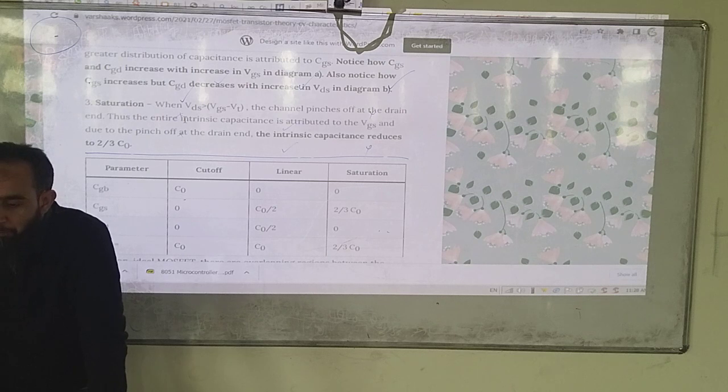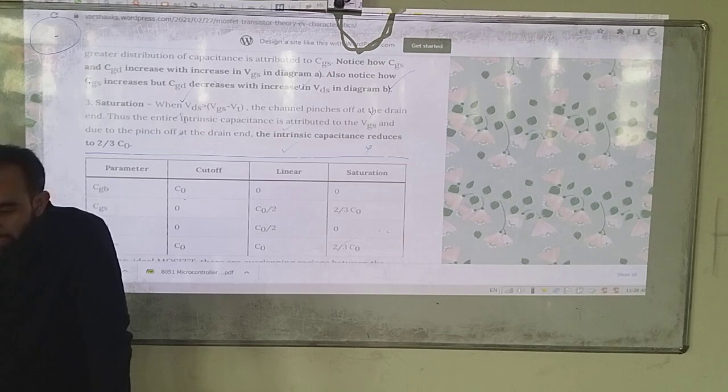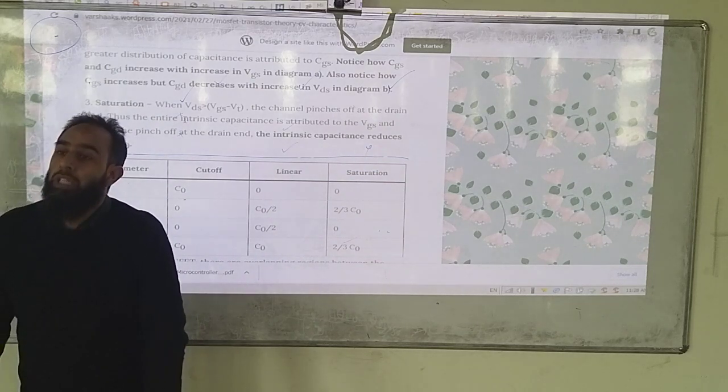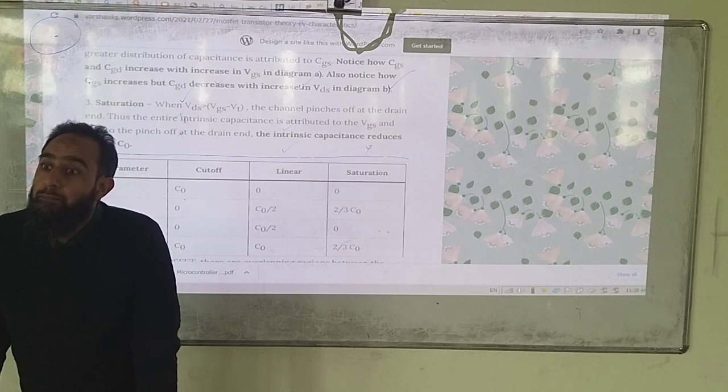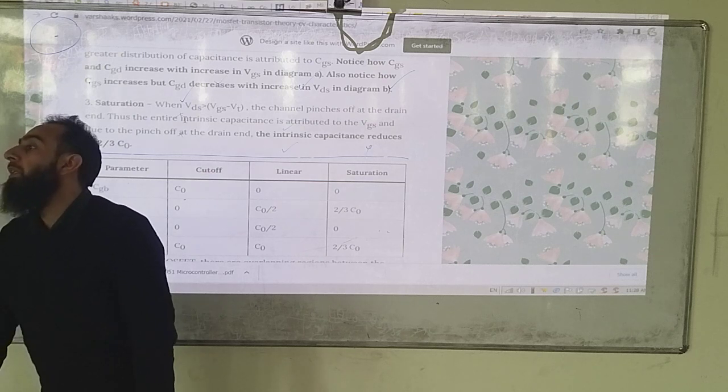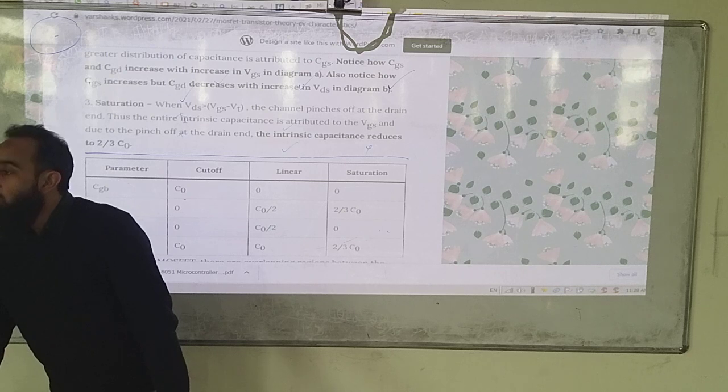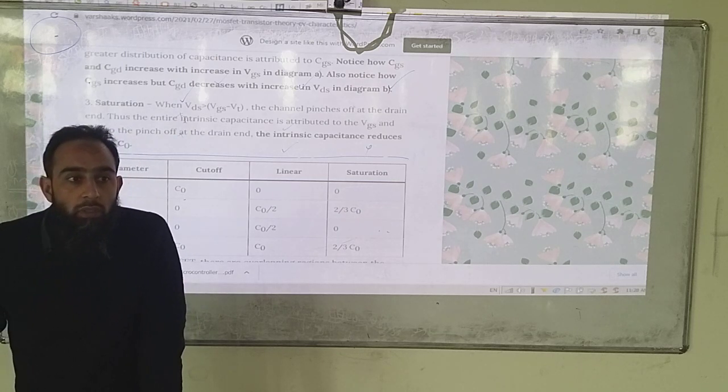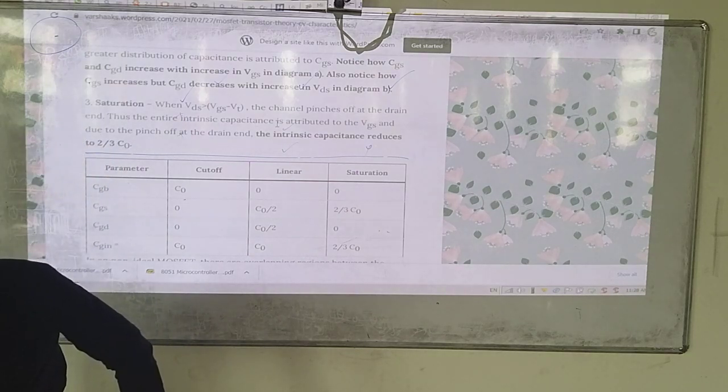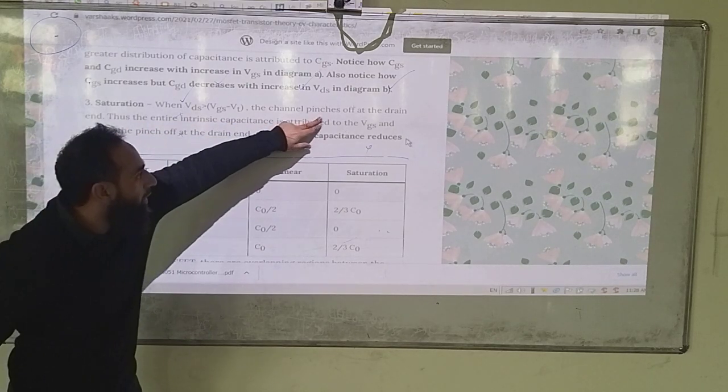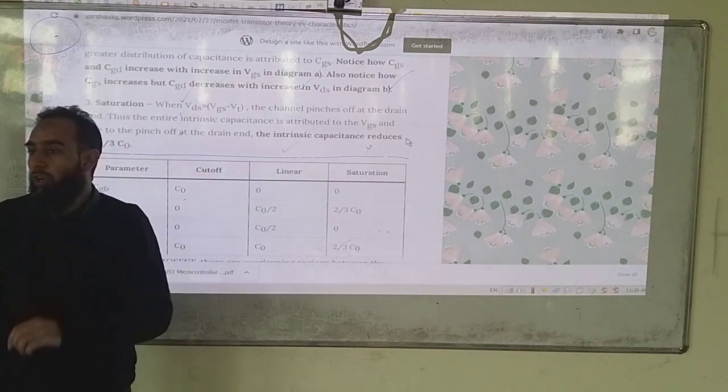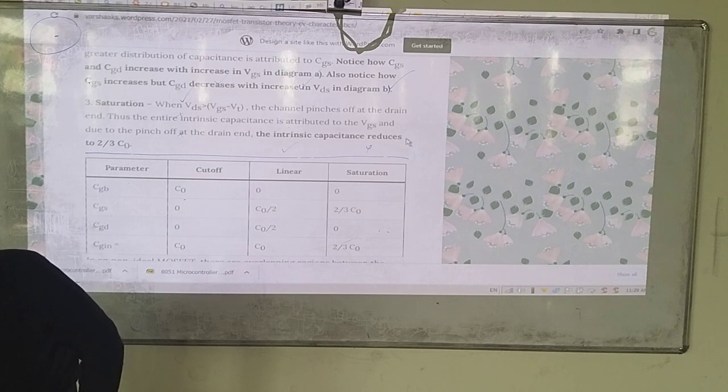Saturation, where the concept of the pinch-off voltage. In this case, entire intrinsic capacity is attributed to CGS, and with the pinch-off voltage, the capacitance reduces to 2 by 3 C naught because our channel is like a trapezoid and there is no capacitance like this. Therefore this will be the value of capacitance.